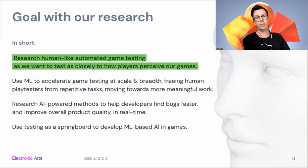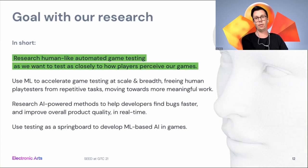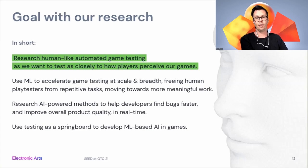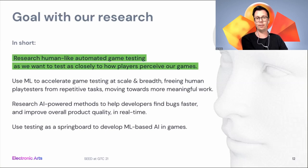The goal of our research is to pursue human-like automated game testing, because we want to test as closely as possible to how players perceive our games. To do that, we use machine learning to accelerate testing both at scale and breadth. The goal is to free human resources from repetitive tasks to do more meaningful work — like testing how fun a game is to play, which is very important. Our research aims to find bugs faster, improve overall quality, and do this in real time. This can also lead to more interesting in-game AI.